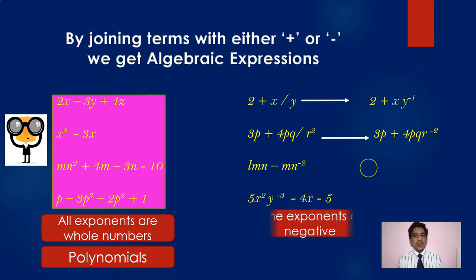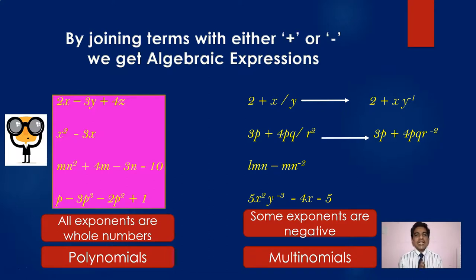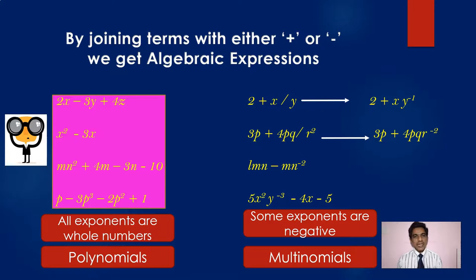Expressions with negative exponents are actually called multinomials. So polynomials are one type of algebraic expression — those where the exponents are always whole numbers like 0, 1, 2, 3, 4, 5. We will discuss only polynomials where the exponents are whole numbers.